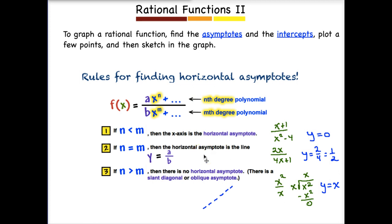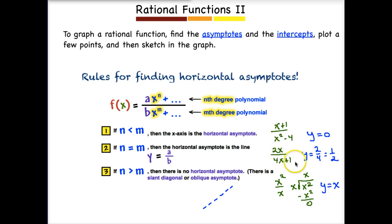In our second example, we have the exponents being the same — a same-heavy problem. In this case, our denominator can divide into our numerator, but all we need to do is divide the coefficients. So in this example, we would divide 2 by 4, and we would find that our horizontal asymptote is Y equals one half.